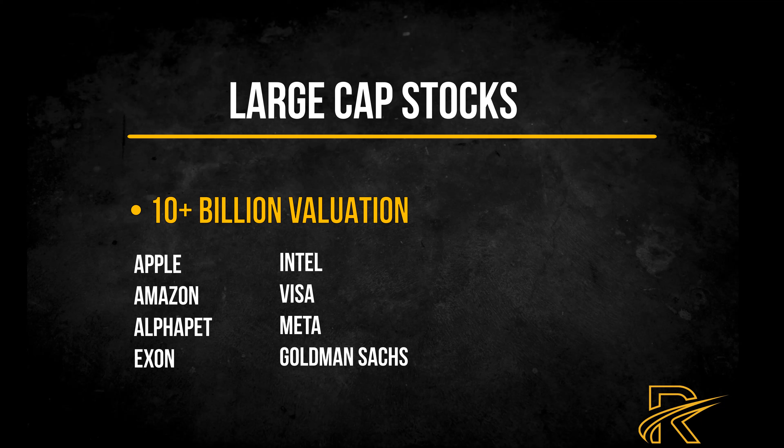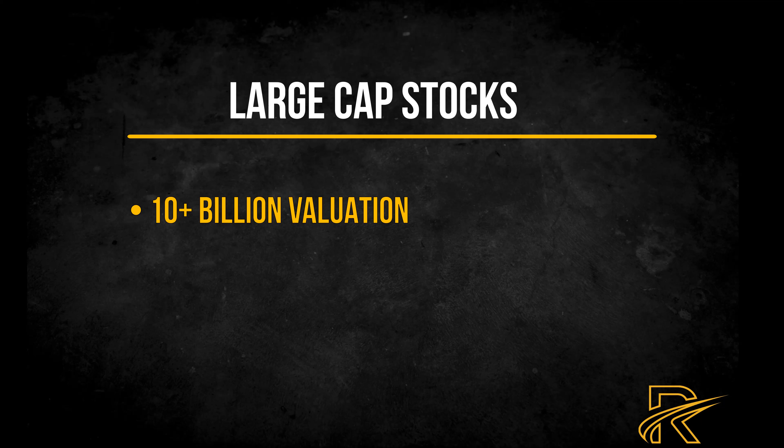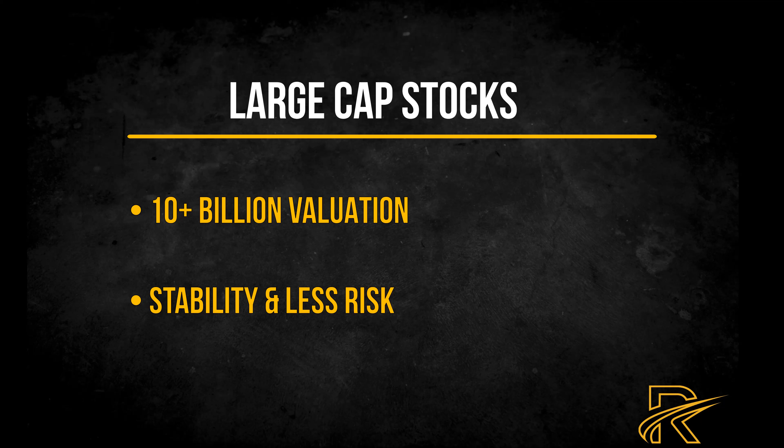To summarize, all stocks in the market are either common or preferred. However, there are plenty of categories you will encounter when you start investing or trading. A very common way to categorize stock is by market capitalization, or market cap. This is the value you get when you multiply the total number of company shares by its current stock price. For example, in Apple's case you multiply 16.071 billion by its current price to get close to 2.4 trillion dollars.